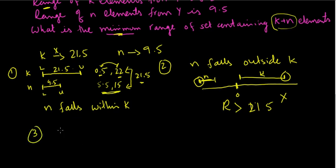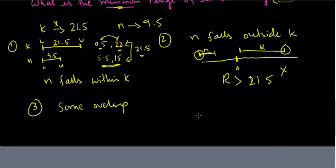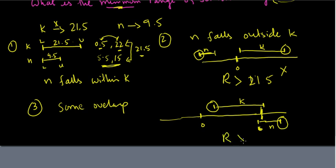Now the third scenario is where you have some overlap, not complete overlap, but some overlap. So again, I'll draw the number line. So I have my zero. Let's say my K is here, the K elements are here. And the N elements, they kind of will start before the highest here, highest in the K, and they go over something like that. This is my N elements, this is my K elements. So you have some overlap happening in this region. If I calculate the range of N plus K in this scenario, my lowest is here, my highest is here. And again, the range in this case would be greater than 21.5 because my highest has moved from here to here.